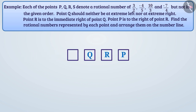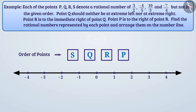Now, we will place the remaining point S in the blank. This gives us the order of points S, Q, R, P. Similarly, we will now arrange the given rational numbers in increasing order. For this, we will use the number line, i.e., we will represent the given rational numbers on the number line.